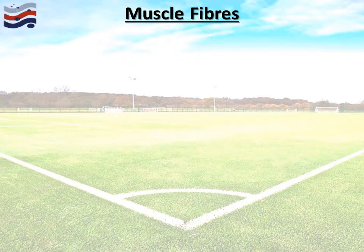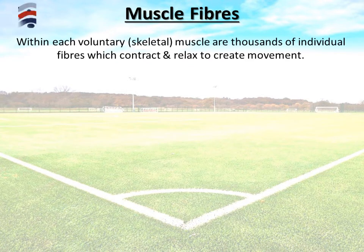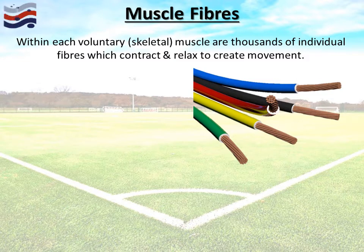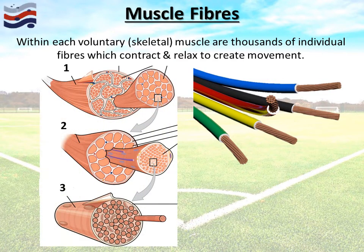We're now going to look at muscle fibre types within skeletal muscle — only talking about voluntary muscles now: bicep, tricep, abdominals and all those we've just learned. These muscles are made up of thousands of individual fibres which contract and relax to create movement. Think of any electrical cable: it looks like one solid cable, but if you strip it back you'd see it's made up of many individual fibres. These fibres are similar to what we have in muscles — shown here as a muscle cut in half, then dissected further to reveal individual muscle fibres.